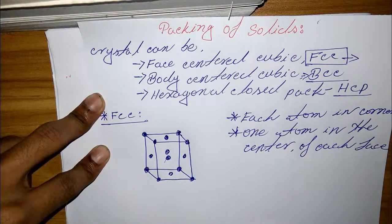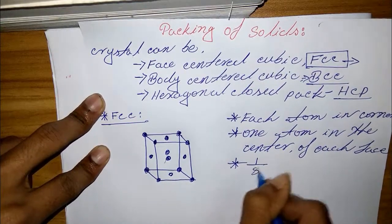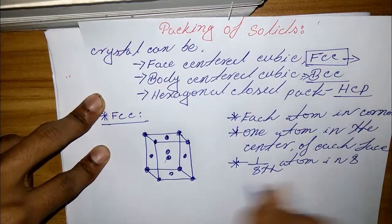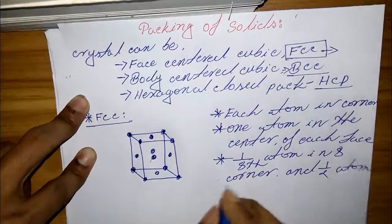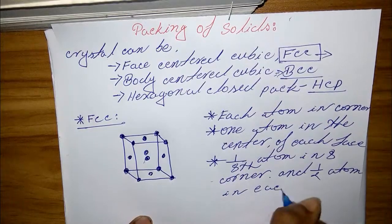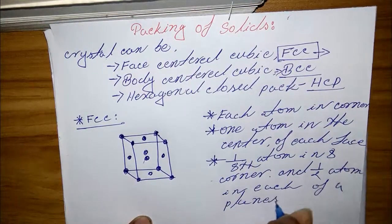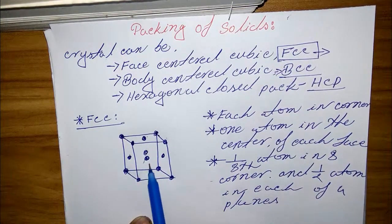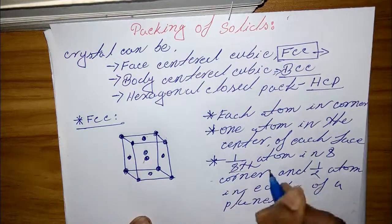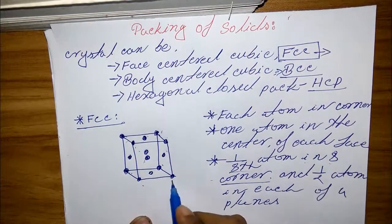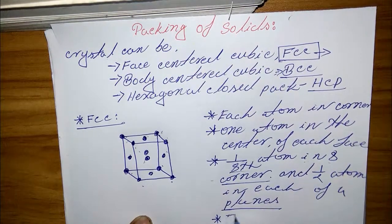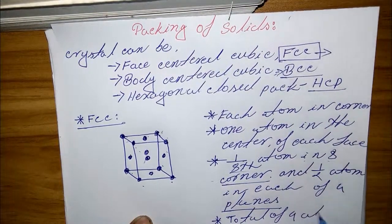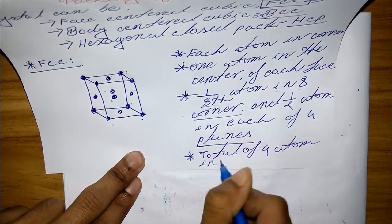In one FCC unit cell, each corner atom contributes one-eighth, and there are eight corners, giving one atom from corners. There are also half-atoms on each of the six face planes, contributing three atoms. The total comes to four atoms in one FCC unit cell.